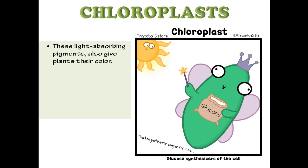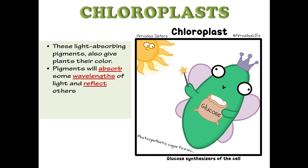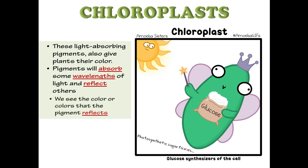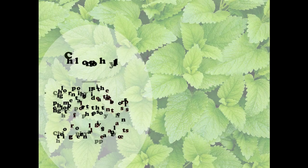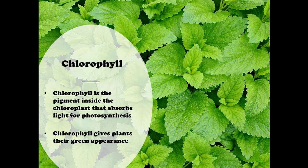These light-absorbing pigments also give plants their color. Pigments will absorb some wavelengths of light but will reflect others — we see the color or colors that the pigment reflects. Chlorophyll is the pigment inside chloroplasts that absorbs light for photosynthesis, and it gives plants their green appearance.